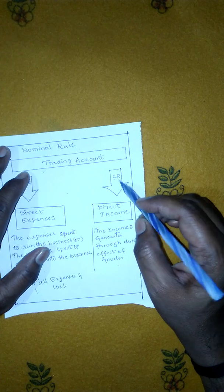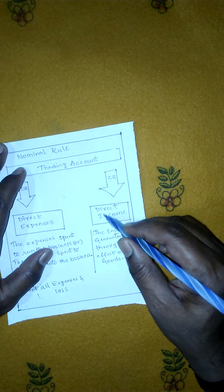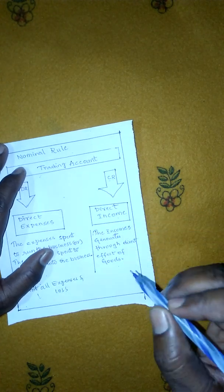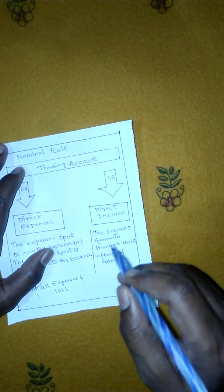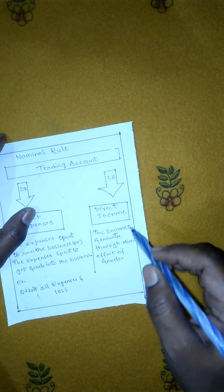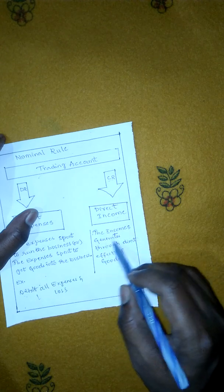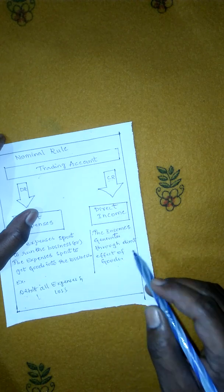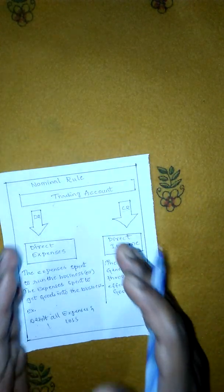On the credit side, all direct incomes are shown. Direct income means whatever amount is received after selling the goods. The income generated through the direct sale of goods is shown on the credit side. This gives us a clear idea of what the trading account represents.